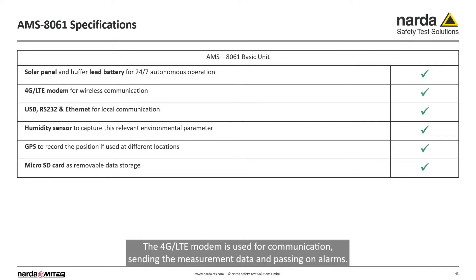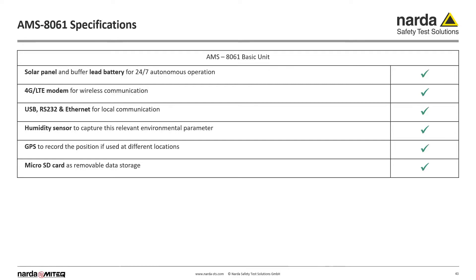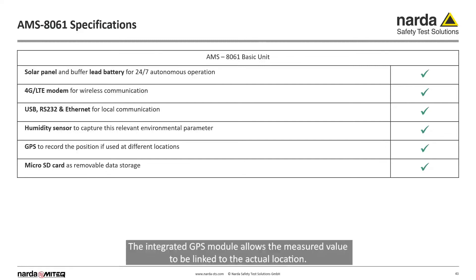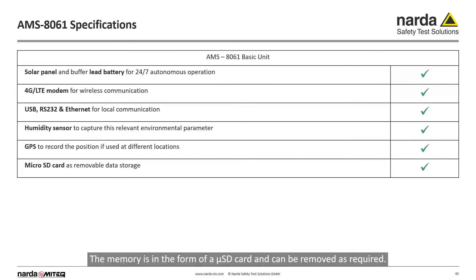The 4G LTE modem is used for communication, sending the measurement data and passing on alarms. USB or Ethernet can be used locally for configuration. The air humidity can also be recorded thanks to its built-in humidity sensor. The integrated GPS module allows the measurement value to be linked to the actual location. The memory is in the form of a micro SD card and can be removed as required.